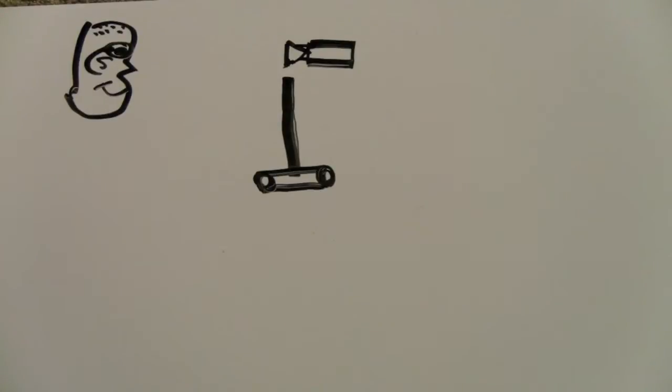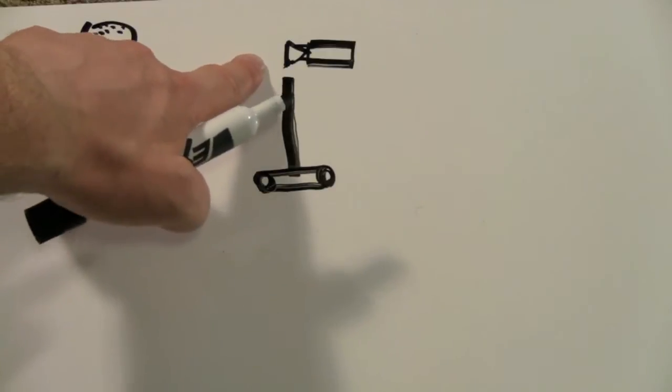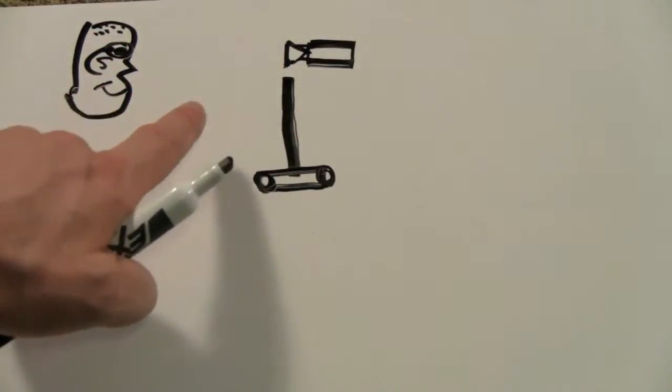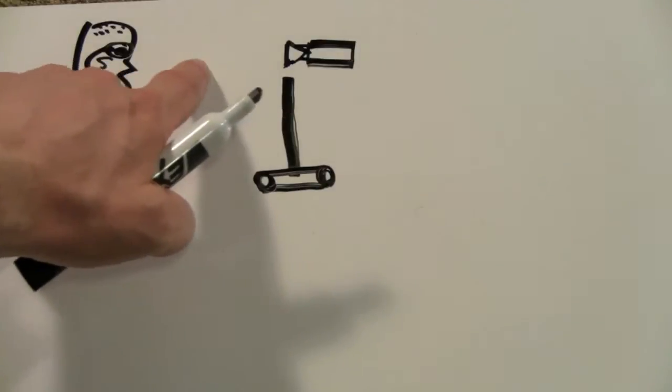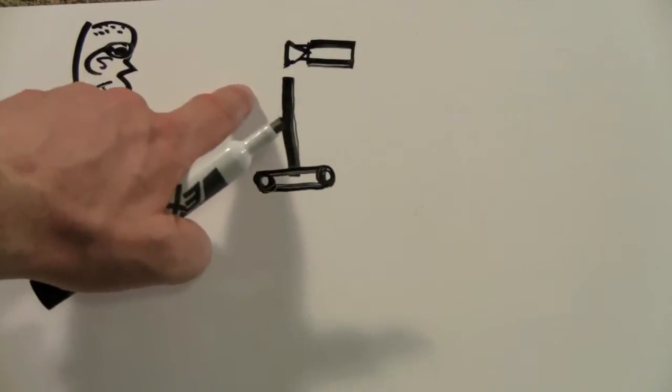We're going to build this really cheap teleprompter that allows our presenter to give the appearance that they're looking straight into the camera, but instead they're actually reading the script right here. The eye line or eye sight is going to look very close to looking at the camera, though they're going to be off center.